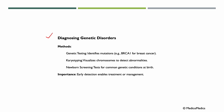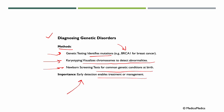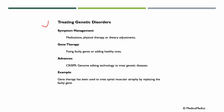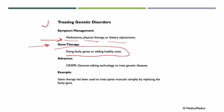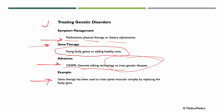How do we diagnose genetic disorders? We have different methods: genetic testing, identifying mutations like the BRCA1 gene for breast cancer; karyotyping, visualizing chromosomes to detect abnormalities; and newborn screening, testing for common genetic conditions at birth — early detection enables treatment or management. For treatment, symptomatic management includes medications, physical therapy, or dietary adjustments. Gene therapy involves fixing faulty genes or adding healthy ones, with advances in CRISPR technology for genome editing. For example, gene therapy has been used to treat spinal muscular atrophy by replacing the faulty gene.